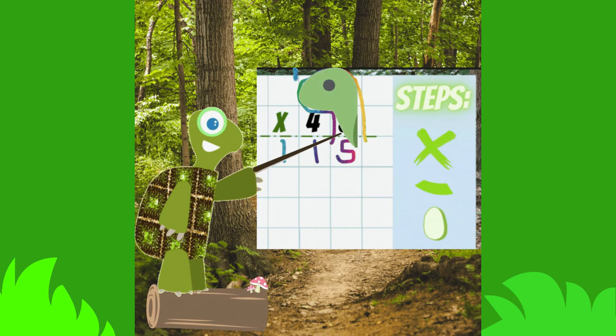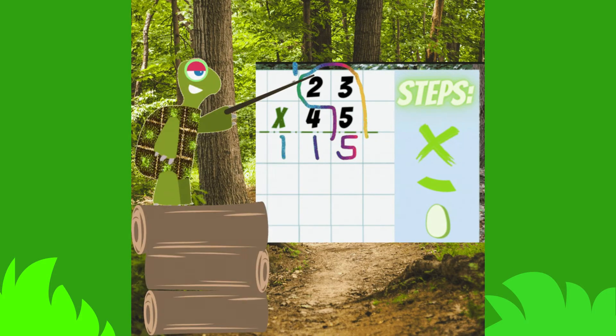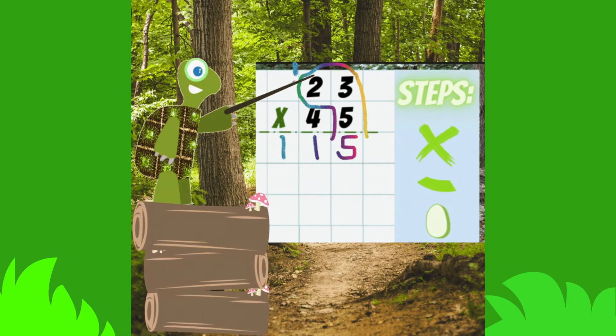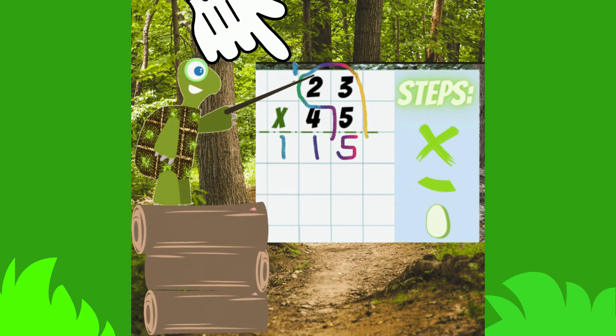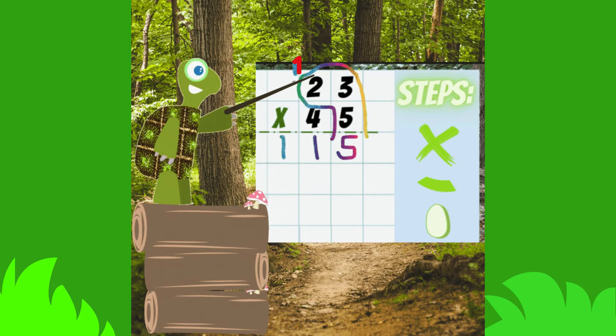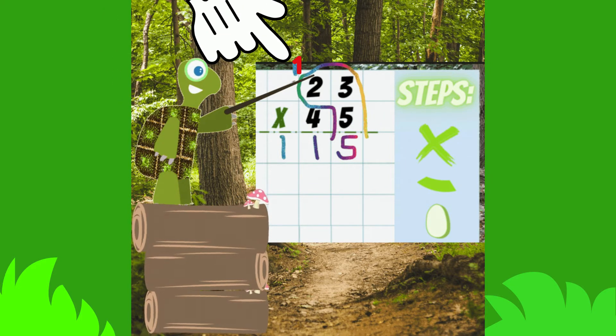Now you can focus on multiplying only what is in the turtle's head by what is in the neck. 3 times 5 is 15. So we put the one in the tens place on his head. When you carry a number, put it on top of the turtle's head so you don't forget to add it.